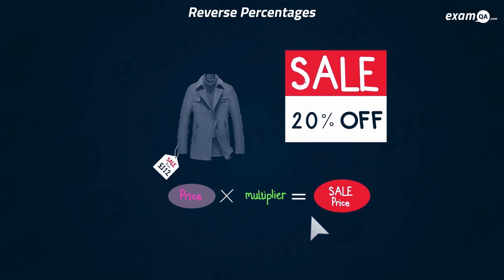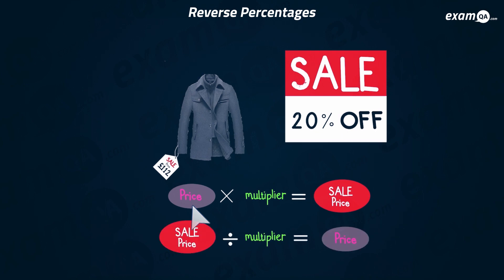Now that we've practiced the multipliers, let's go ahead and do this question. If you want to do a percentage decrease to find the sale price, you do the price times the multiplier which gives the sale price. But of course we want to go backwards — we've got the sale price and we want to work out the original price. So we need to do the reverse: you get your sale price, you don't times by the multiplier but you divide by the multiplier, and that gives us back the original price.